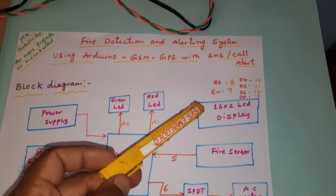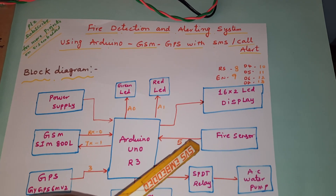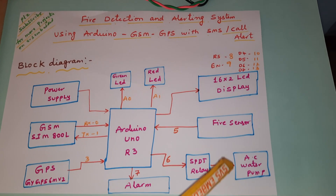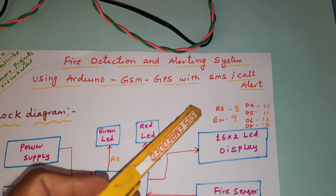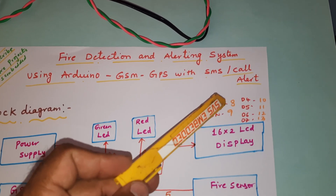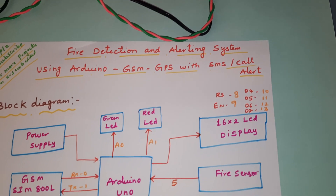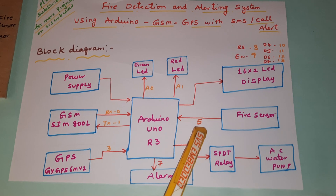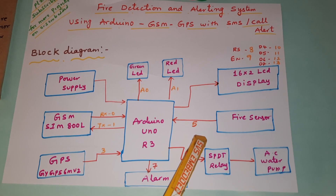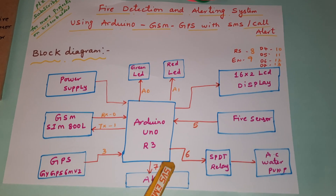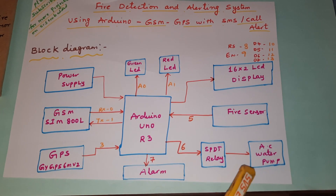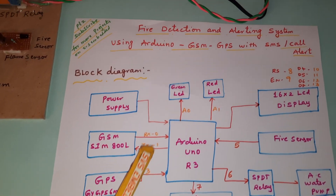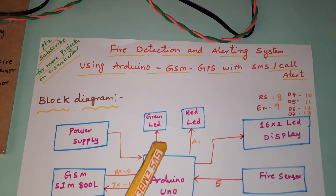We are also using a 16x2 LCD display, one fire sensor, SPDT relay, and water pump. The LCD is connected with RS, enabled, D4, D5, D6, D7, pins 8, 9, 11, 12, 13. The fire sensor is connected to digital input pin 5, relay pin 6, pump alarm pin 7, GPS pin 3, red LED and green LED at A0 and A1.